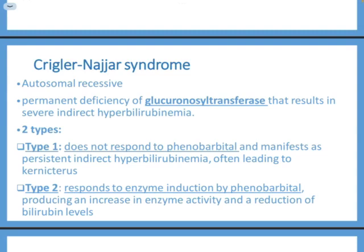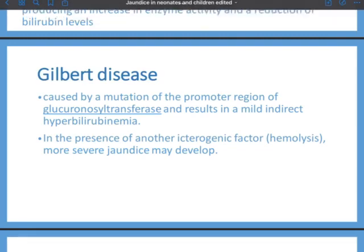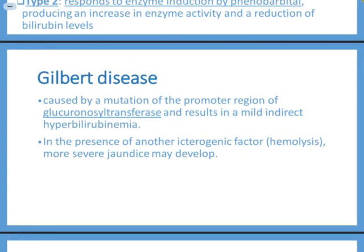Gilbert disease involves a mutation in the promoter region of glucuronosyl transferase, causing mild indirect hyperbilirubinemia. Patients don't present with severe hyperbilirubinemia but may notice persistently yellow sclera. They may not be diagnosed until adulthood. Gilbert syndrome does not cause significant clinical manifestations on its own; however, if combined with another hemolytic cause, it may cause moderate to severe presentation.